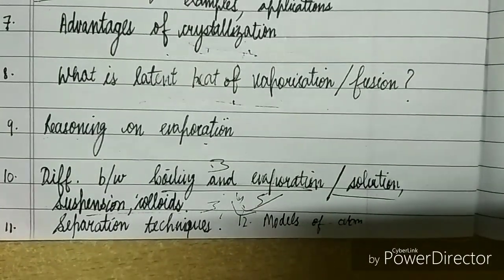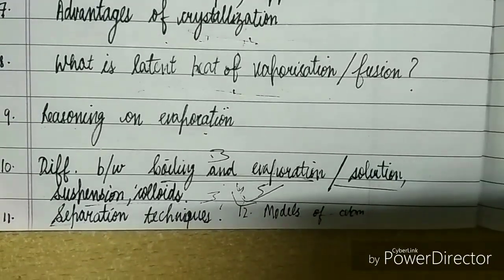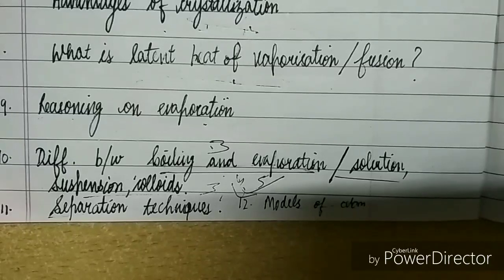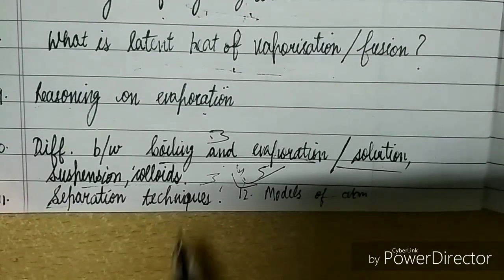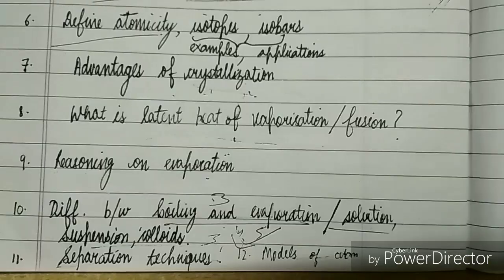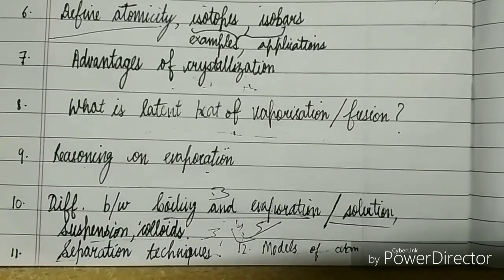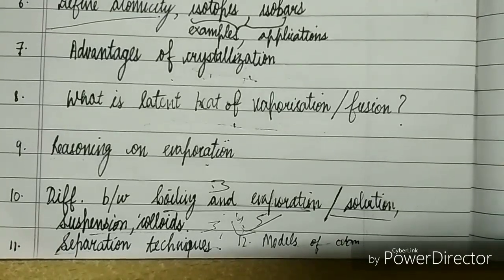Then, eleventh question: separation techniques. The second chapter, Is Matter Around Us Pure, is basically based on separation techniques. Be clear with all the techniques. You should know the applications, especially distillation, fractional distillation, and normal distillation. You should be clear with the difference between those two.